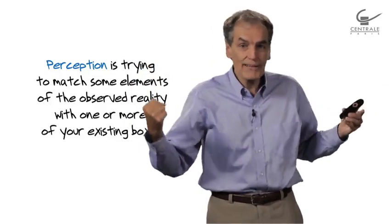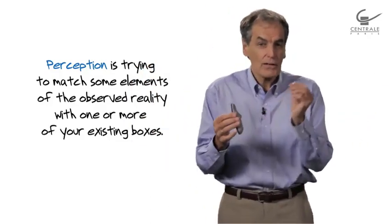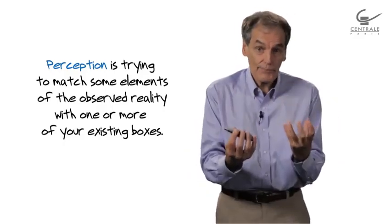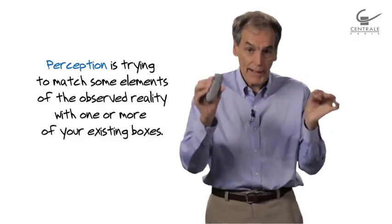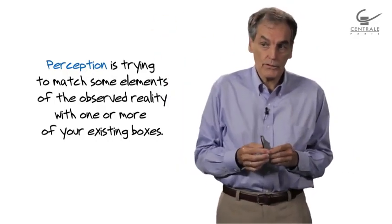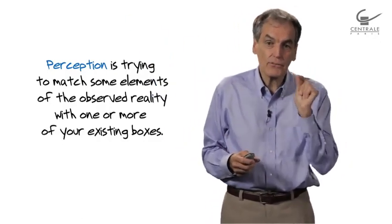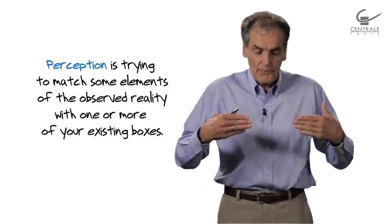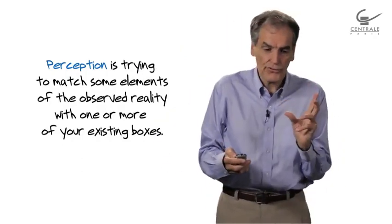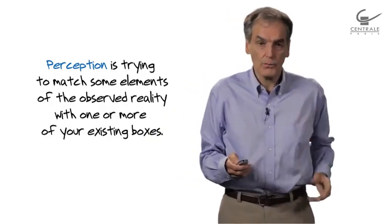So, to perceive is not just to open the window and look what's outside. To perceive is an effort. It's made of four elements: it's to try - there is an effort - to match some elements of the outside world, because you don't see the world completely, with existing mental models. Now, let's use the definition with some examples, just to illustrate, because you perceive all the time. So it's worth understanding exactly how it works.